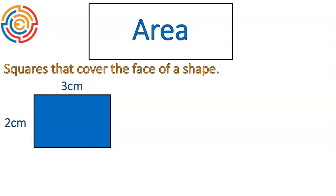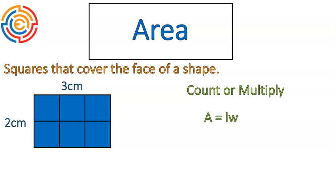You can calculate the area of a rectangle by counting or by multiplying. We're first going to use the formula: area equals length times width. That is the multiplying method. The counting method is a little bit more complex, but it would look like this. If you drew lines on there measured out — this one's three centimeters by two centimeters — you could count the number of squares that actually cover the face.